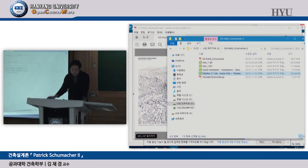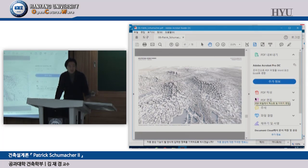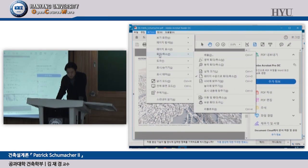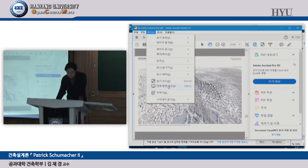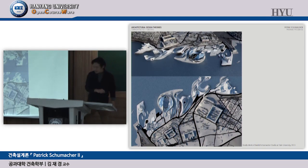This is form-oriented design; GIS is actually a similar way of working. We can use that idea — not in terms of form but in terms of logical design generation. It's getting increasingly complex. This is student work by Zaha and Patrick Schumacher's studio.